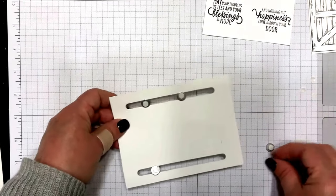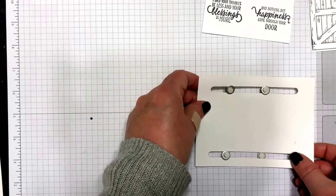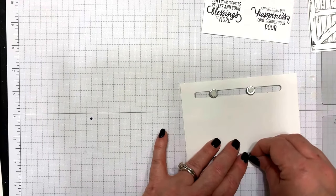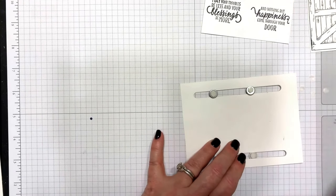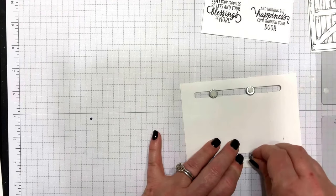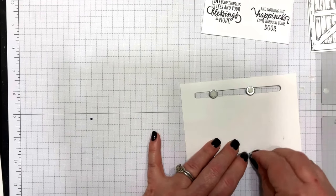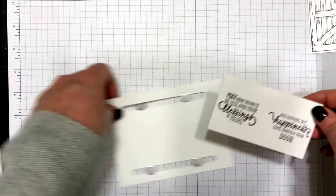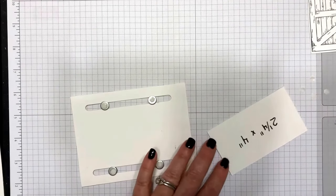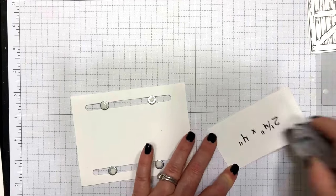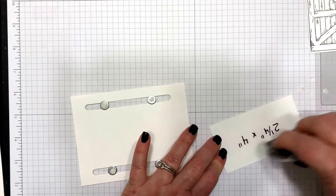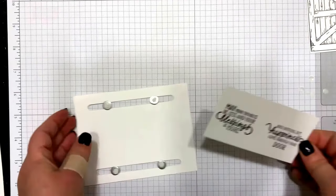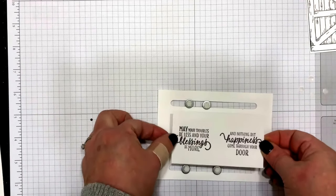I'll put this one in there, peel that off, and then this can go right there on top of that. Okay, so you just want to make sure those are nicely in the rails. I'm going to go ahead and use my snail adhesive to adhere my greeting on the inside, or you could if you want just stamp directly on there, but I like to give myself a little room for error.